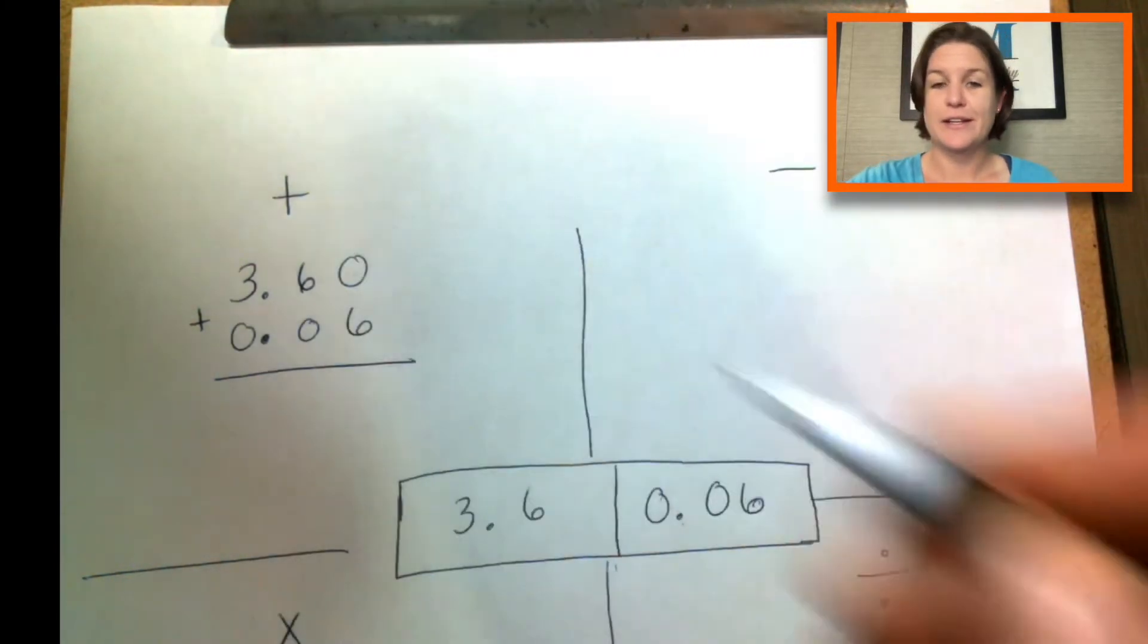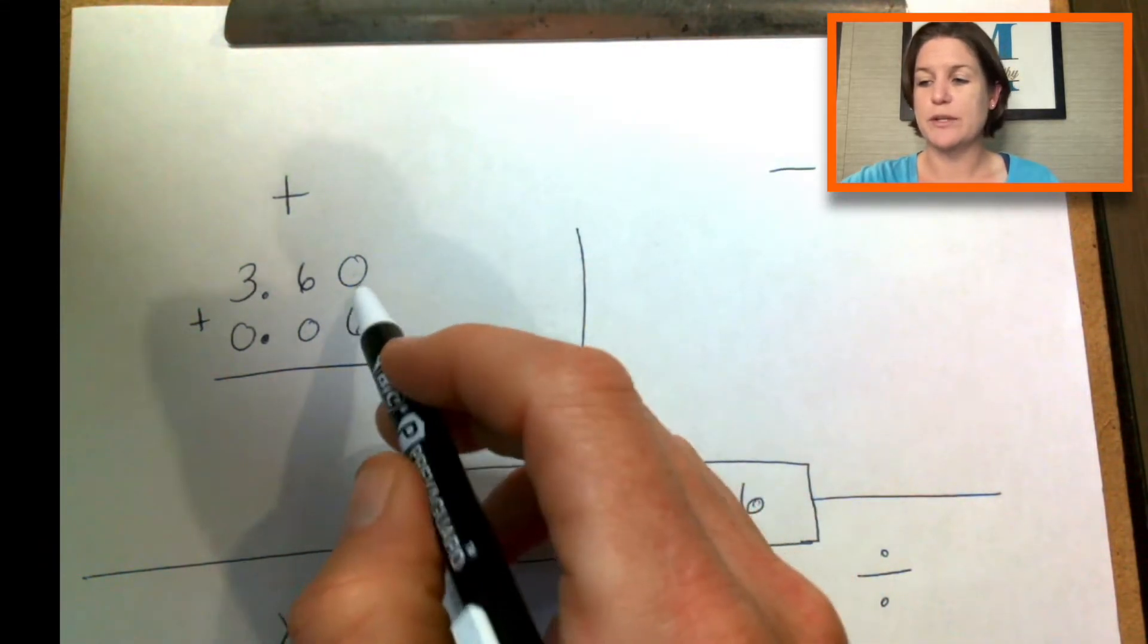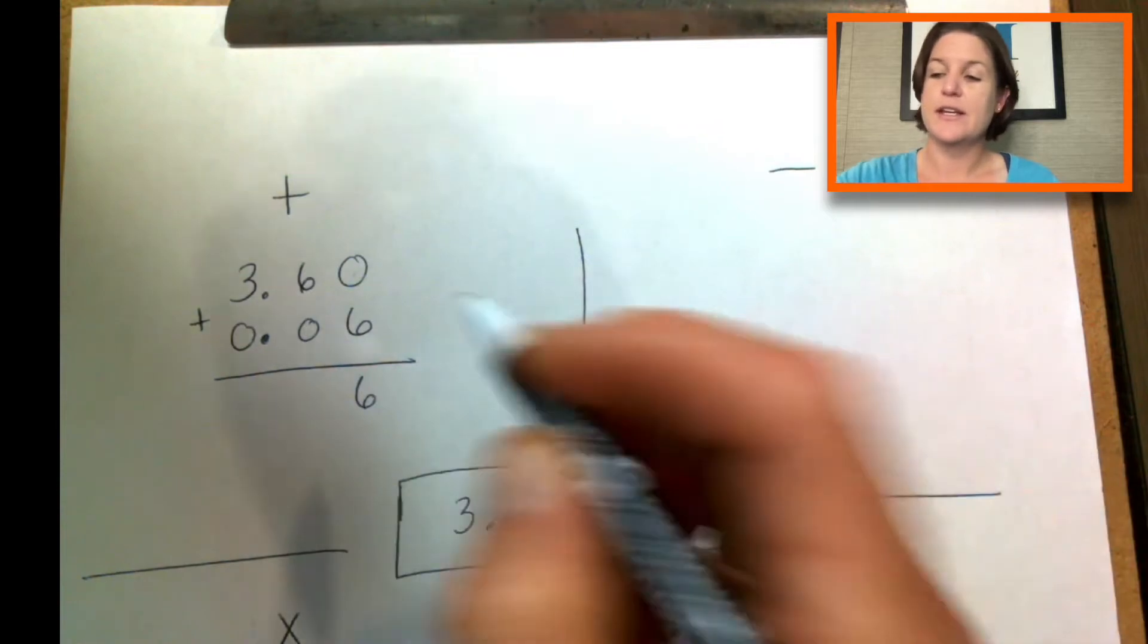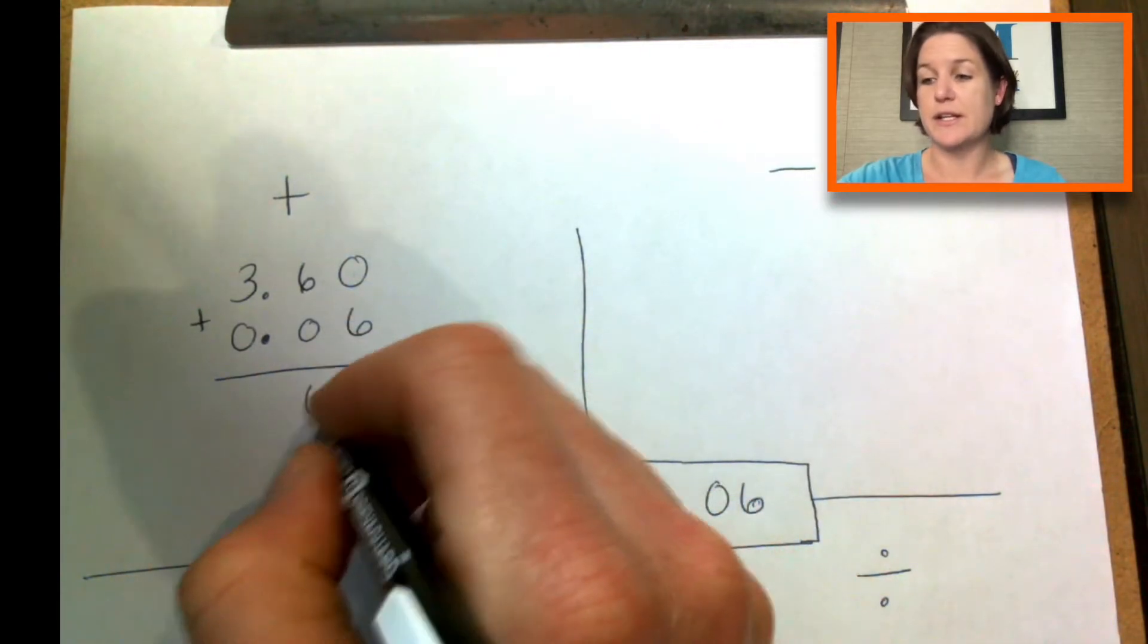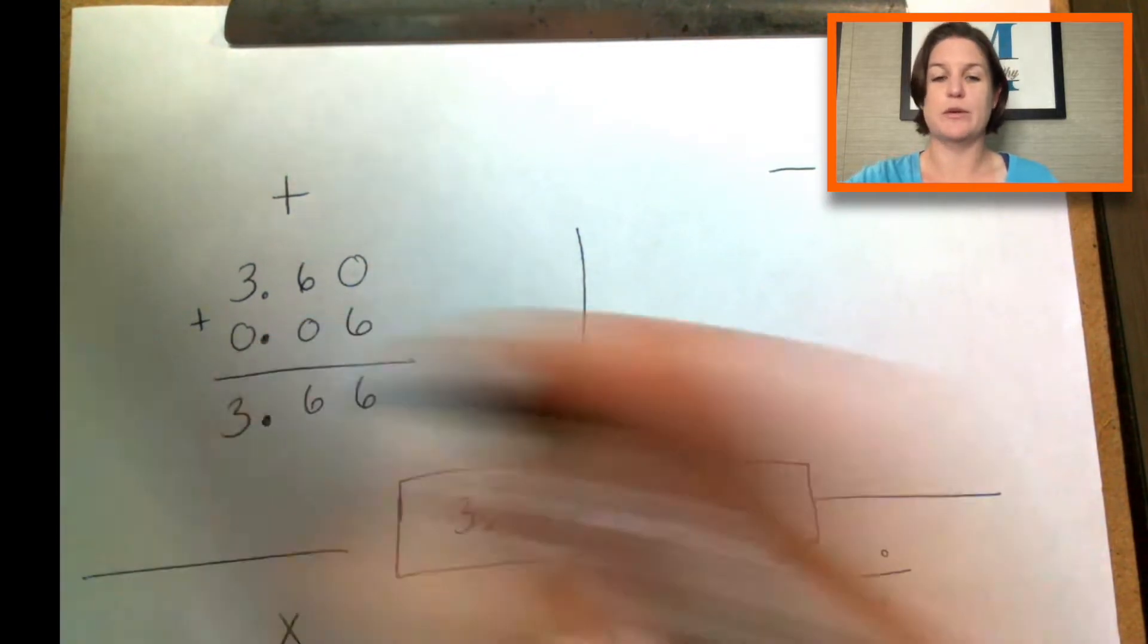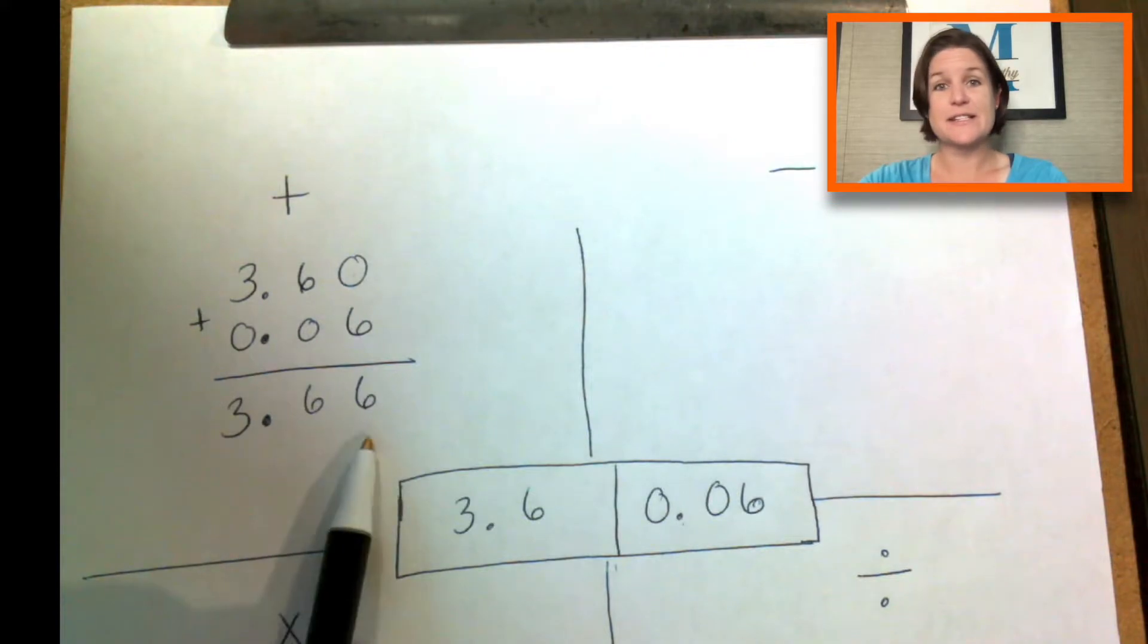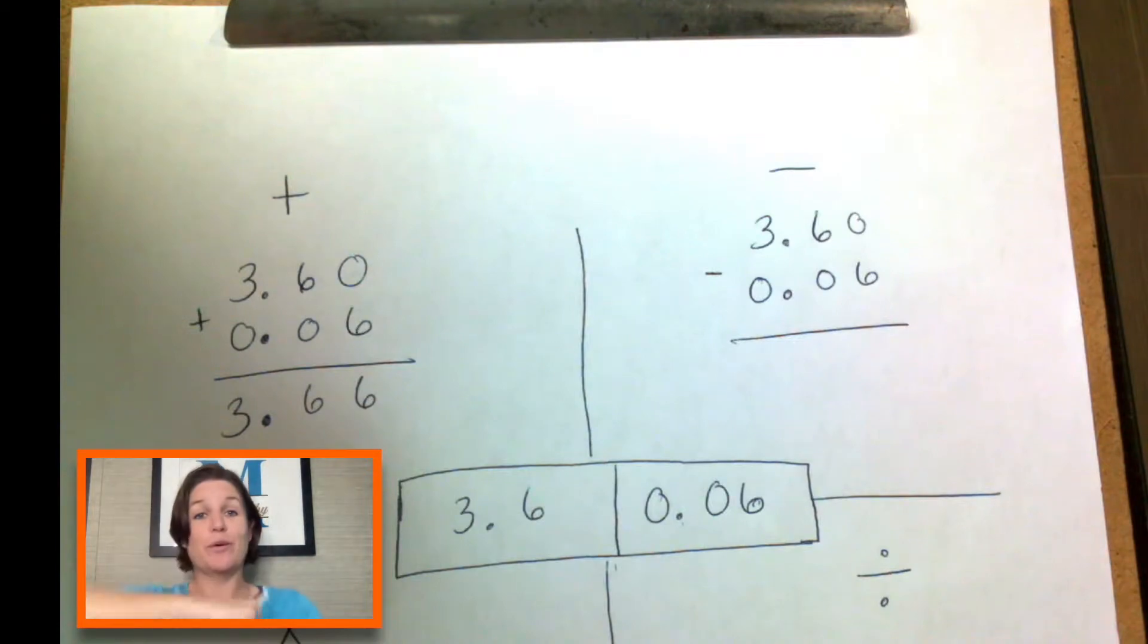Now, what do we need right here? A zero, right? And this is a simple example, but it is a fifth grade example. So zero plus six would be six. Six plus zero would be six. Bring down your decimal and three plus zero is three. And we would read this as 3.66, all right? When you add or subtract with decimals, you need to line them up, which we did.